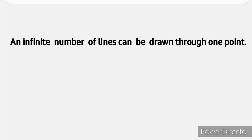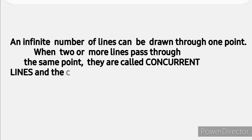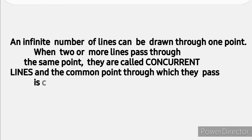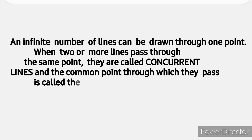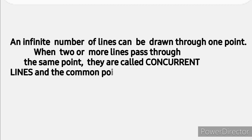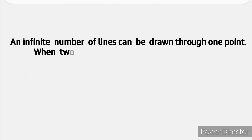In geometry, an infinite number of lines can be drawn through one point. When two or more lines pass through the same point, they are called concurrent lines, and the common point through which they pass is called their point of concurrence.